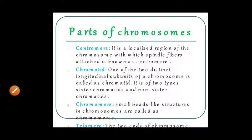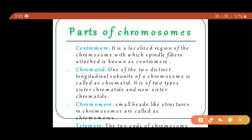The last part of this topic covers the parts of the chromosome. There are different parts: centromere, chromatid, chromomere, and telomere. The centromere is a specialized DNA sequence of a chromosome which links a pair of sister chromatids. Students should not be confused — the centromere is not always present in the middle of the chromosome; sometimes it can be present on the terminal side as well.